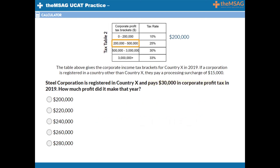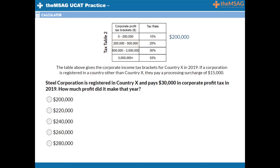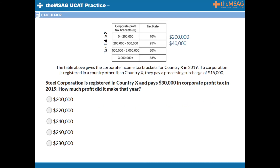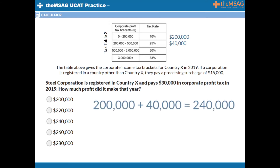But by how much? That extra $10,000 of tax must come from the 25% bracket, meaning that $10,000 equals a 25% tax on a certain amount of profit. To find that amount, do $10,000 divided by 0.25 — the decimal form of 25%. $10,000 divided by 0.25 gives $40,000. This means $40,000 of Steelcourt's profits were charged at 25%, giving $10,000 in extra tax. $40,000 on top of a full $200,000 in the lower bracket gives a total of $240,000 corporate profit.